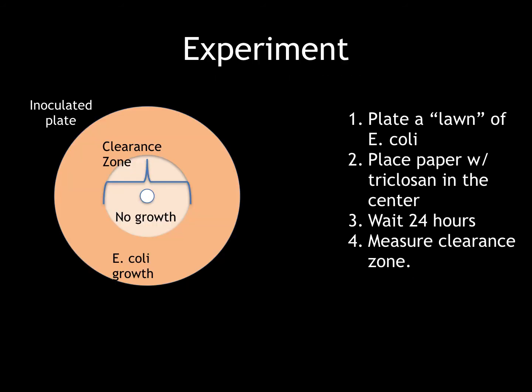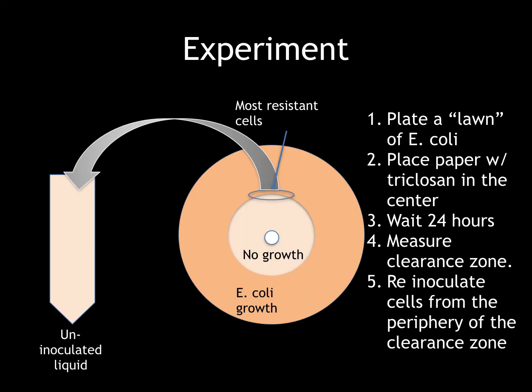Following our procedure, we initially plated a lawn of E. coli, thus inoculating the plate. A piece of paper dipped in Triclosan was placed in the center, and then we waited 24 hours. You can see that there should be a clearance zone where no E. coli is growing, and around this zone there will be E. coli growth surrounding the outsides of the plate. After measuring this clearance zone, we're going to take some colonies from right around the edge of the no-growth zone, which are most likely our most resistant colonies, and put them in a liquid bacterial growth medium.